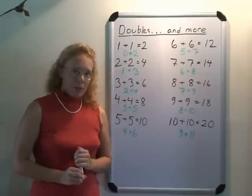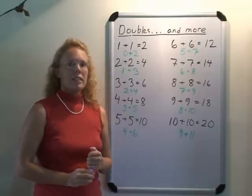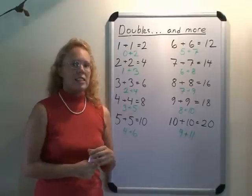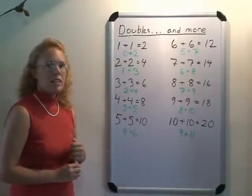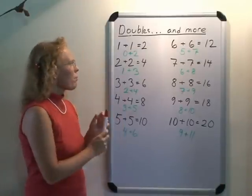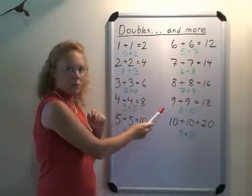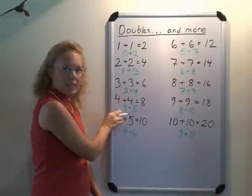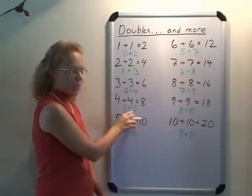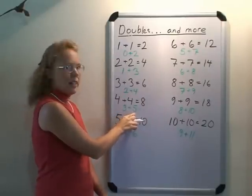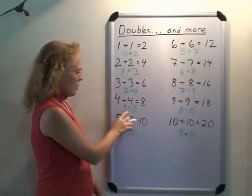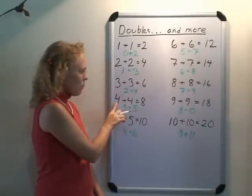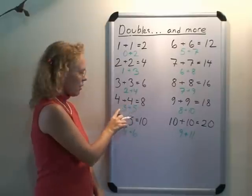Once children have memorized their doubles, then there's another hidden set of addition facts they can learn with the help of the doubles, and I've put them here in green. For example, four and four equals eight. Once they know that, then if you take one number less than four and one number more than four, which are three and five, then the sum is also eight. The sum does not change. It's kind of like you take away one from this one and give it to this one, three and five.